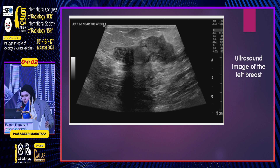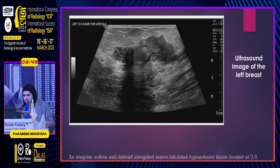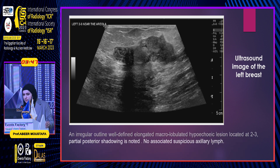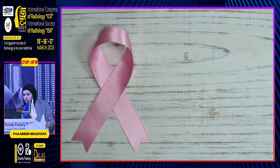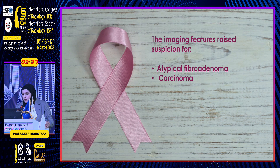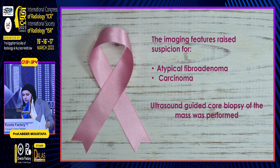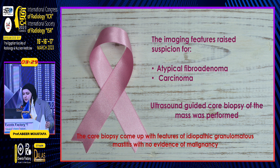From these images, we were confused about whether it is a breast carcinoma or a benign lesion like a fibroadenoma with atypical appearance. This is her color-coded Doppler study, and there is hypervascularity within and around the lesion. So the imaging features raised suspicion for atypical fibroadenoma or carcinoma, and an ultrasound-guided core biopsy was performed, which came back as idiopathic granulomatous mastitis.